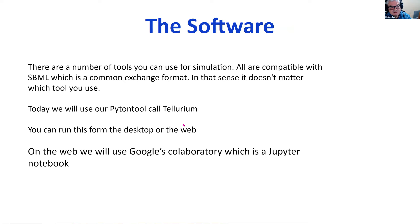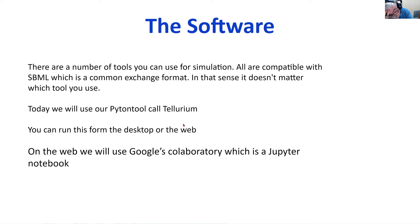Today is all about building computer models of cellular processes — metabolism, signaling networks, gene regulatory networks, and other reaction networks, with some emphasis on metabolism. To build models, one approach is to derive the differential equations yourself and type them into something like MATLAB, then ask the program to solve the equations and get your plots.